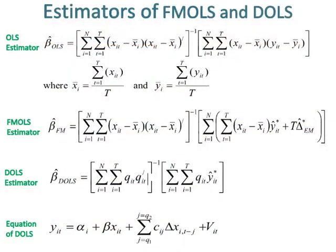Regarding the estimators of FMLS and DOLS: the FMLS estimator is constructed by making corrections for endogeneity and serial correlation to the OLS estimator. The DOLS estimator equation is also given. Serial correlation and endogeneity can be corrected using the DOLS estimator. The DOLS is an extension of Stock and Watson's 1993 estimator, and the dynamic OLS estimator is obtained from the equation of DOLS given at the end of the slide.